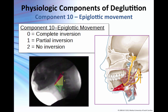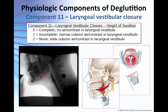Epiglottic movement: we're looking at complete inversion, partial inversion (everything from horizontal up to complete inversion), or no inversion at all. Laryngeal vestibular closure is assessed at the height of the swallow — at maximal anterior hyoid displacement — looking at any material in the laryngeal vestibule between the arytenoid cartilage and the epiglottic base. This is an example of a score of one that you'll learn.